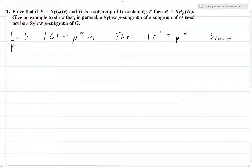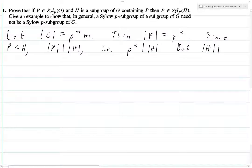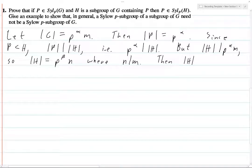Since P is a subgroup of H, the order of P divides the order of H. But we also have H is a subgroup of G, so the order of H divides P to the alpha M. So the order of H we can write as P to the beta N, where N divides M. Then obviously, since P to the alpha divides H, this beta must be alpha here.